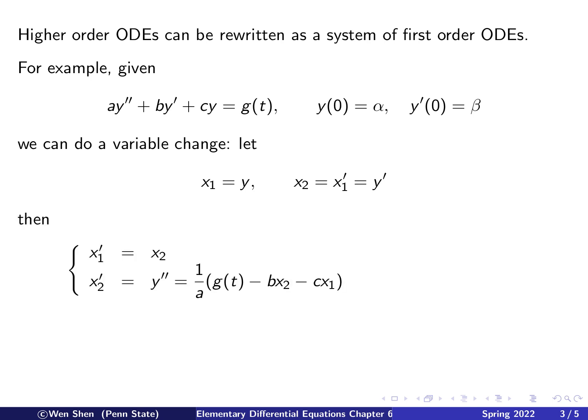So this in particular means we wish to express x1 prime equals something, and x2 prime equals something. And that something should contain just x1 and x2 without the derivatives. So what is x1 prime? Well, look at the definition of x2. x1 prime is exactly x2. So we have that immediately.